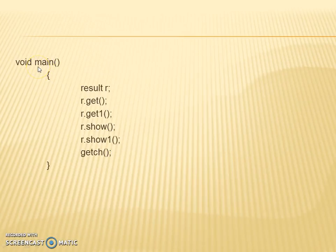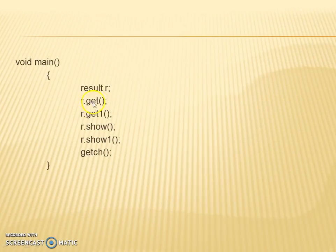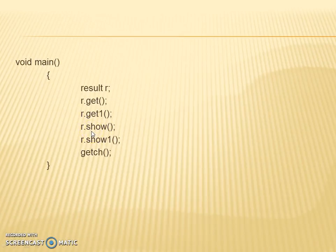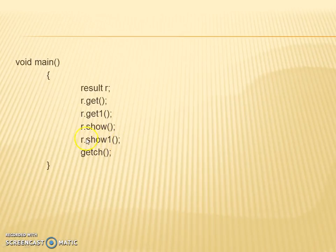In the main function we create an object r of the derived class Result, and call object.get, object.get_one, object.show, and object.show_one. The get method receives roll number and name from the user; show displays them. get_one accepts marks from the user, and show_one displays those marks on screen. This is an example of single-level inheritance passing features from base class to derived class.